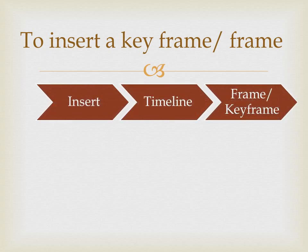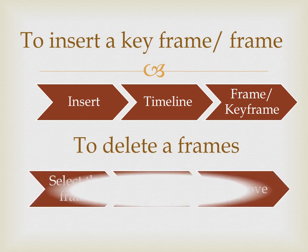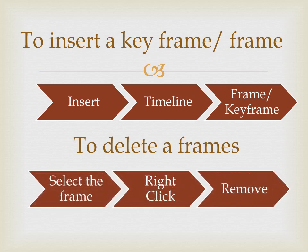Now, how to insert a keyframe or frame. First, click the frame below the number where you want to insert a frame or keyframe. Now click the Insert menu, then the Timeline option, then select the Frame or Keyframe option. To delete a frame, select the frame you want to delete, then right-click the selected frame and click the Remove Frame option.